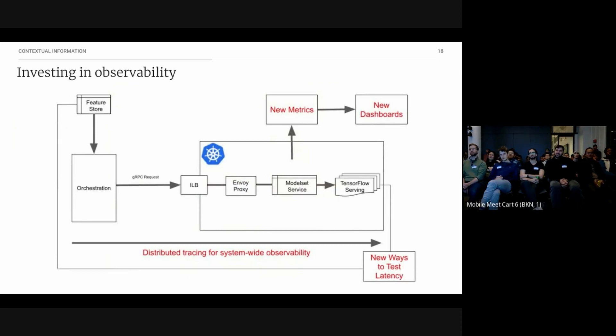So what we did was invest further in observability. We added distributed tracing to our systems for more system wide observability. So you could get spans and see how long different portions of our system were contributing to latency. We got new metrics from proxies like Envoy and made new dashboards with them that helped out. And we added new ways to test latency like Caliper, which allowed us to iterate faster and find the problem faster.